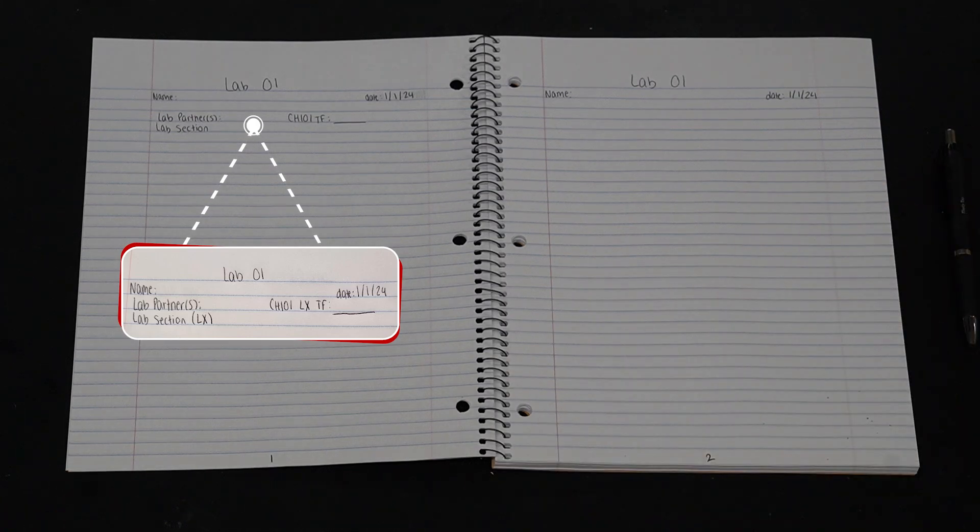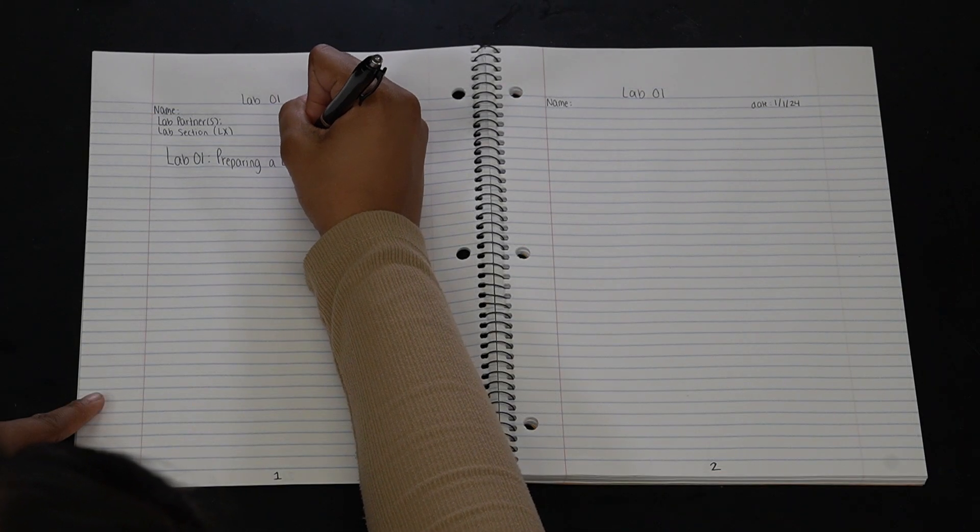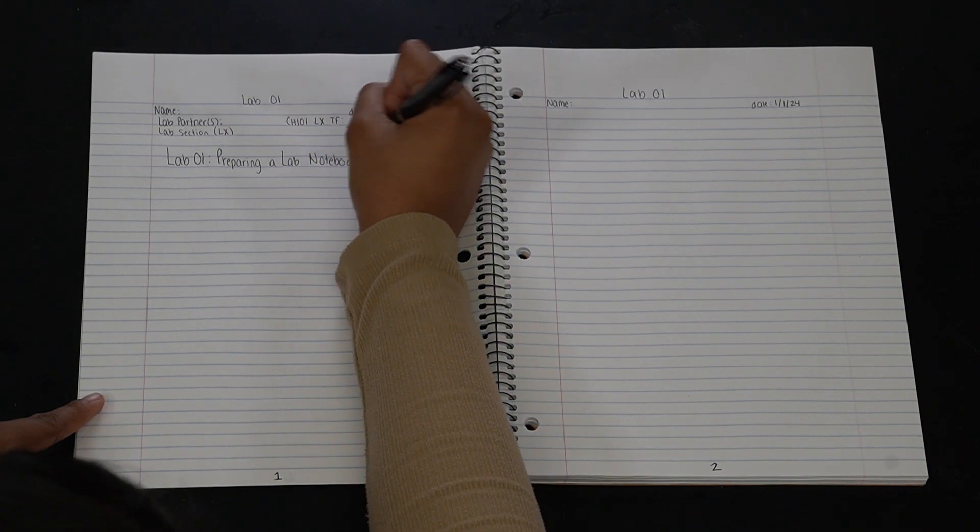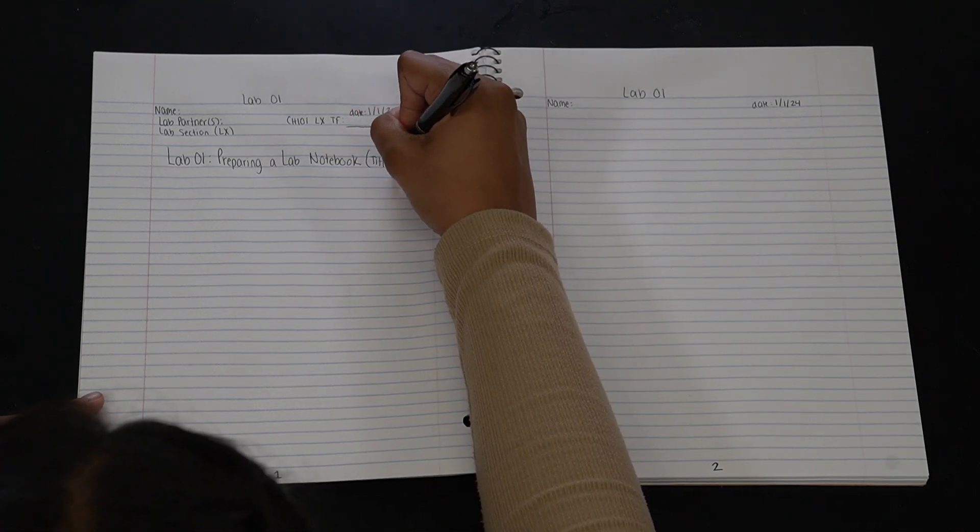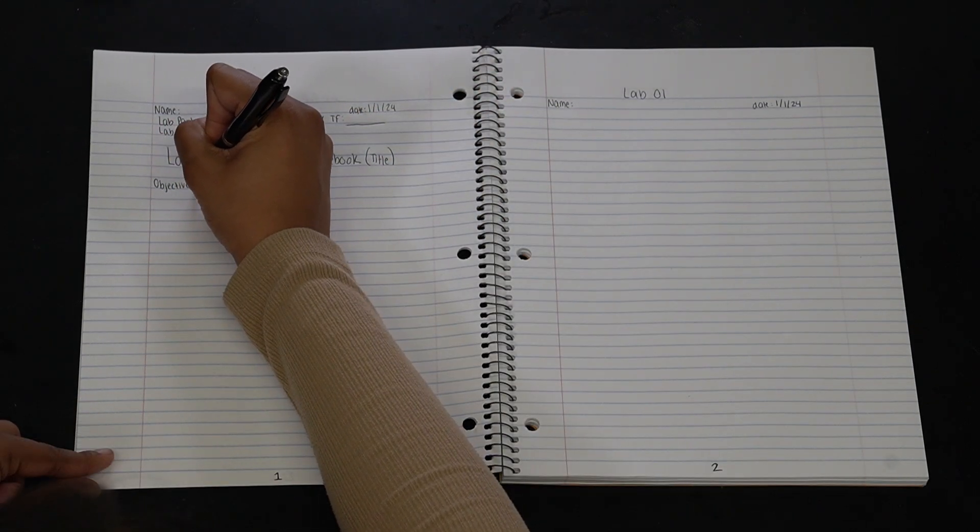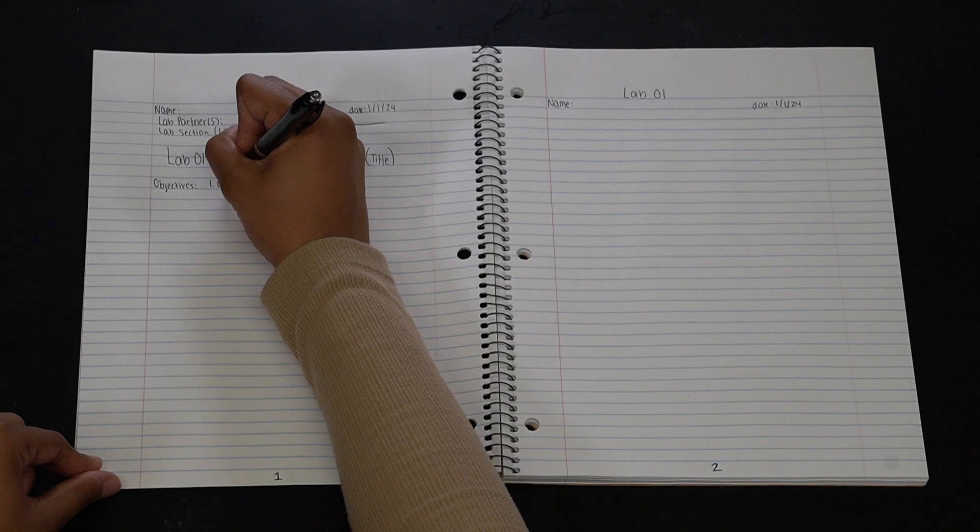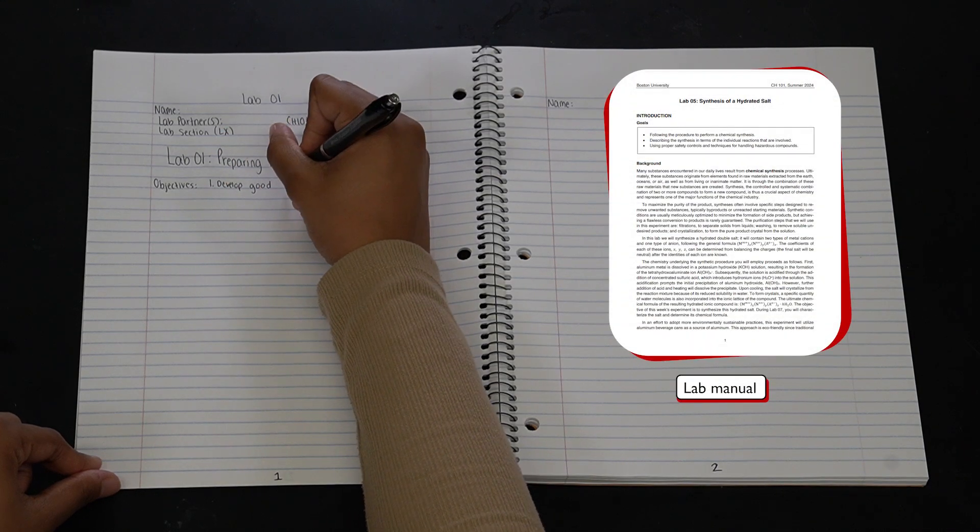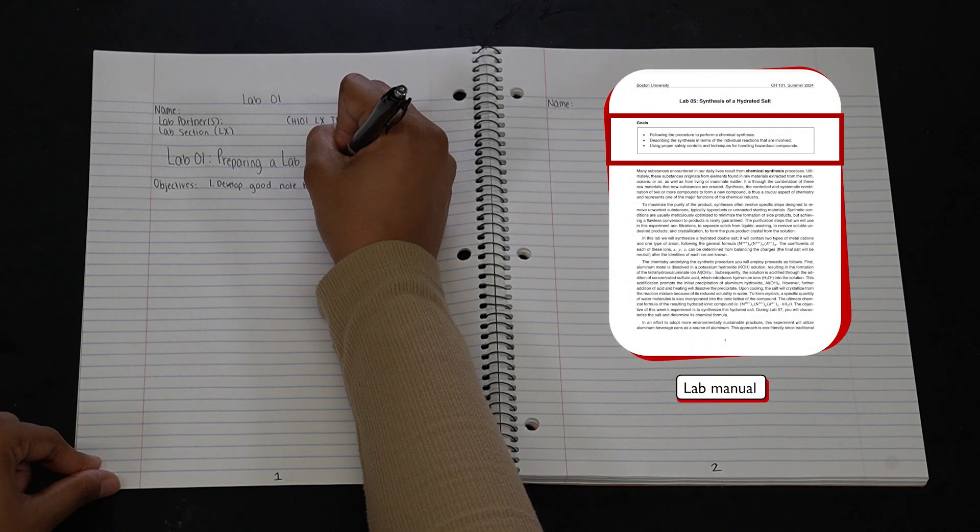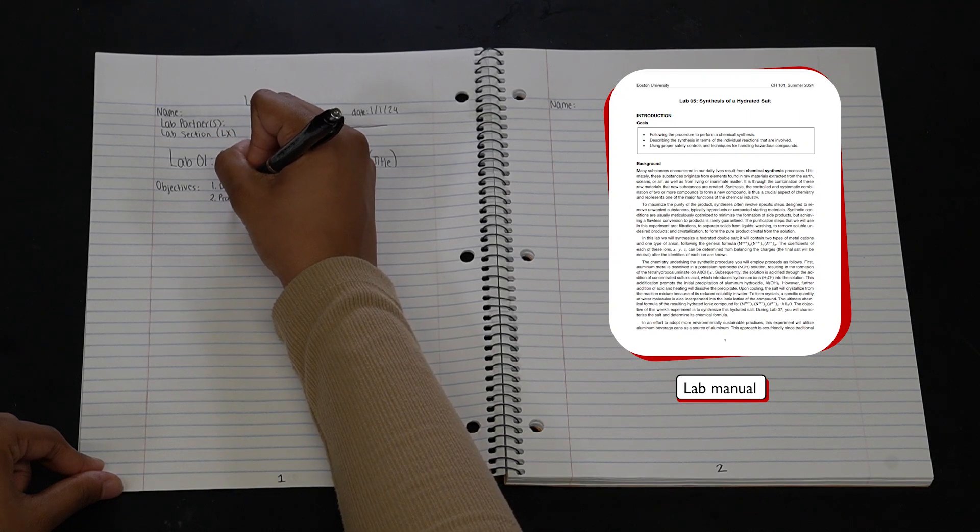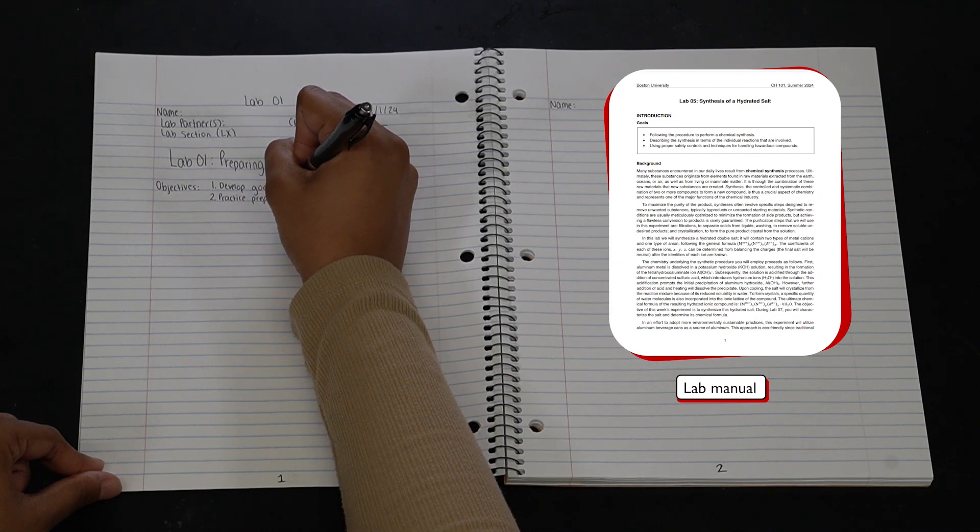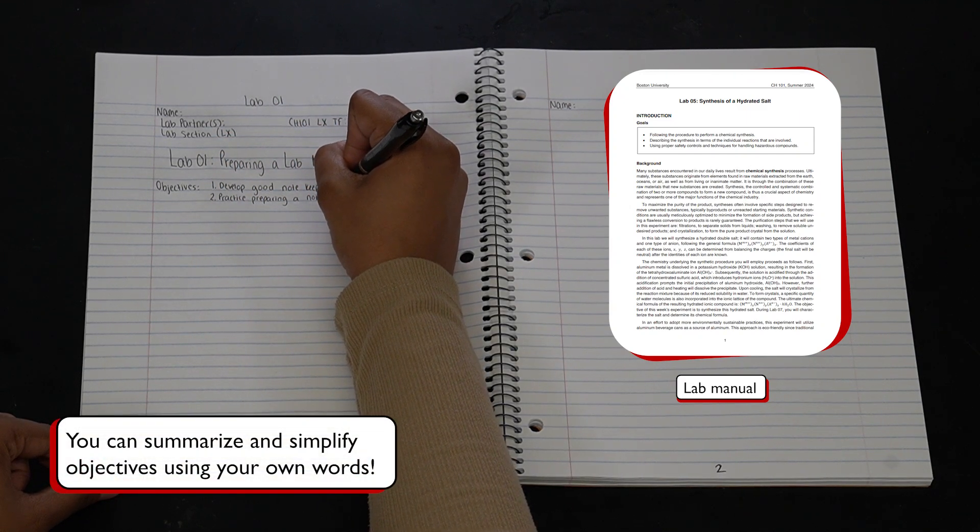These will be filled in during the experiment. Then we should write out the complete title of the experiment we will perform. The first part of the main text is the objectives of this experiment. The objectives are usually provided in the lab manual. However, to save time, instead of copying the objectives word for word, we can simplify or summarize them in our own words.